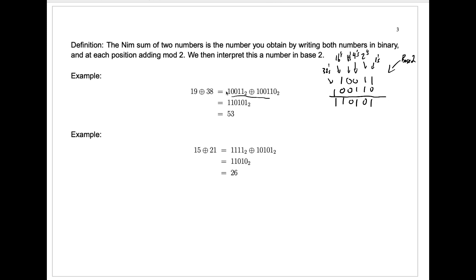So the Nim sum of 19 and 38 is the number with base 2 representation 1, 1, 0, 1, 0, 1. That's 32 plus 16 plus 4 plus 1. That's 53. So we say 19, Nim sum, 38 is 53. When you're doing it by hand, I would always recommend doing it this way, lining up the numbers like that. Let's run through another example real quickly.